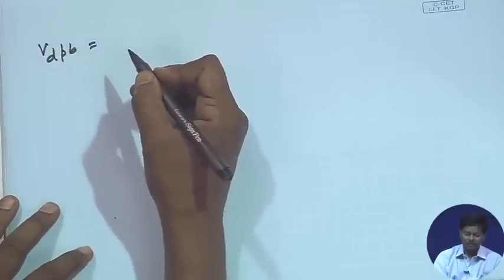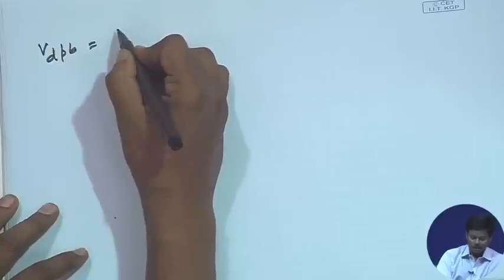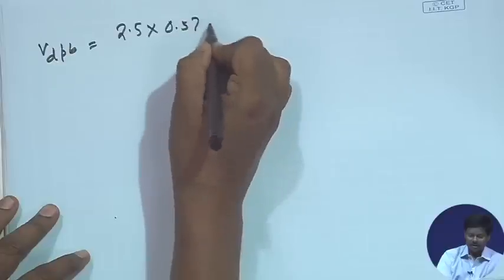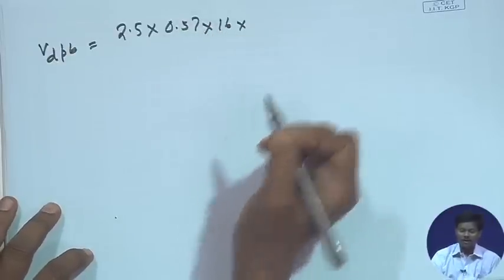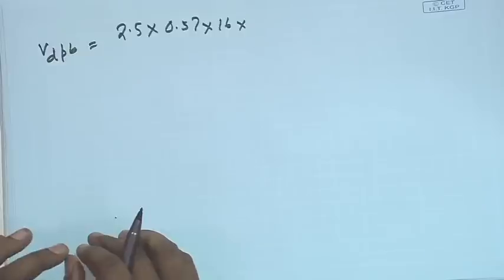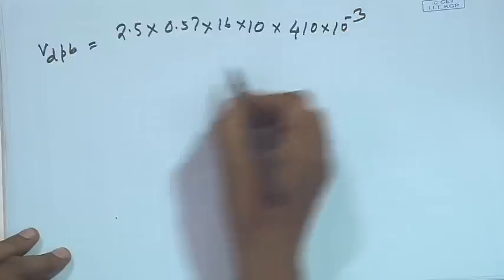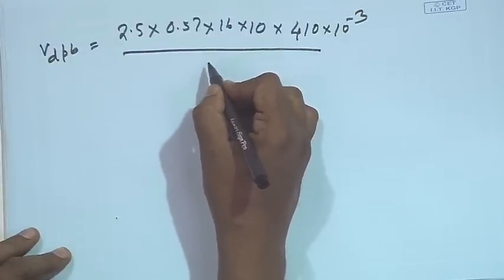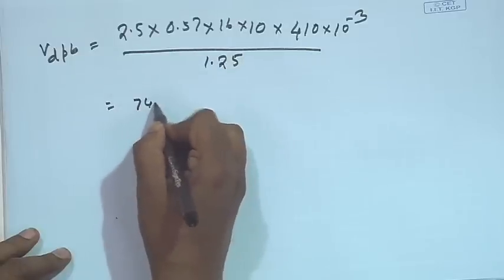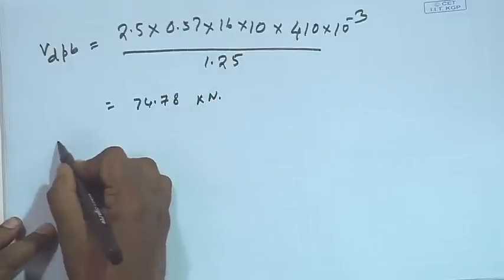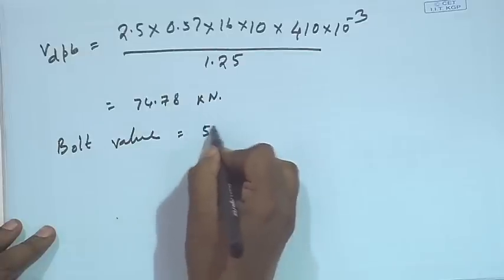For V_dpb in the double cover butt joint: k_b = 0.57, d = 16 mm, and t is the thickness of the thinner plate = 10 mm. The cover plate thickness = 18 / 2 = 9 mm (approximately 8 mm used). V_dpb = 74.78 kilo Newton. Therefore the bolt value = min(52.21, 74.78) = 52.21 kilo Newton.